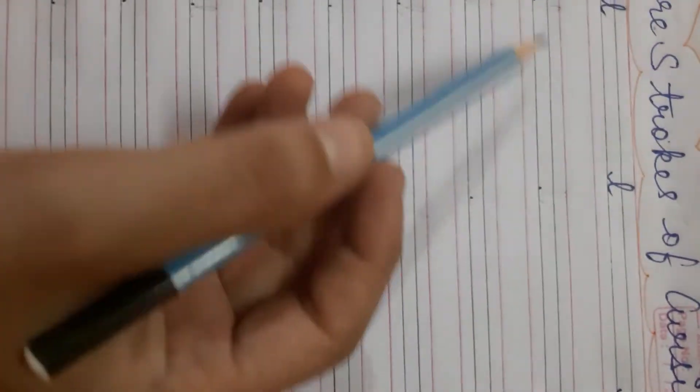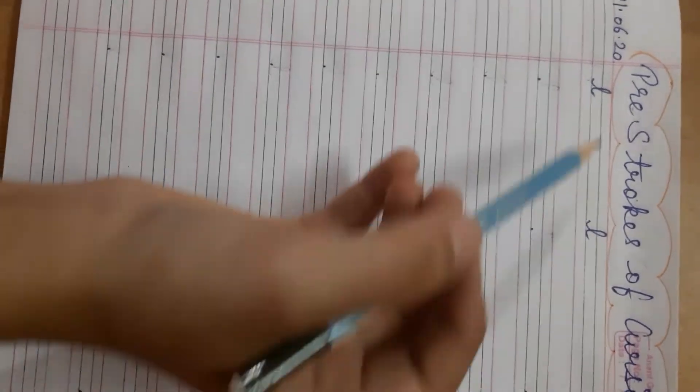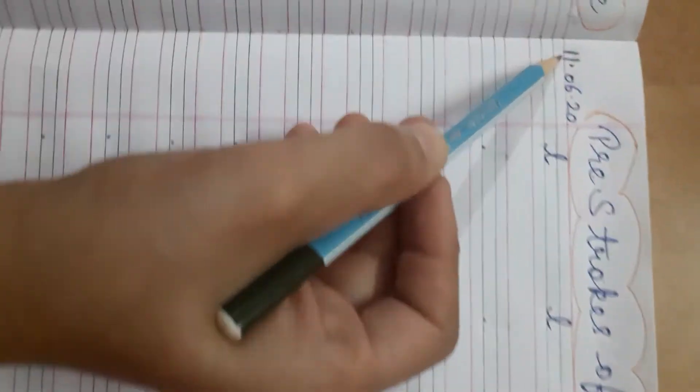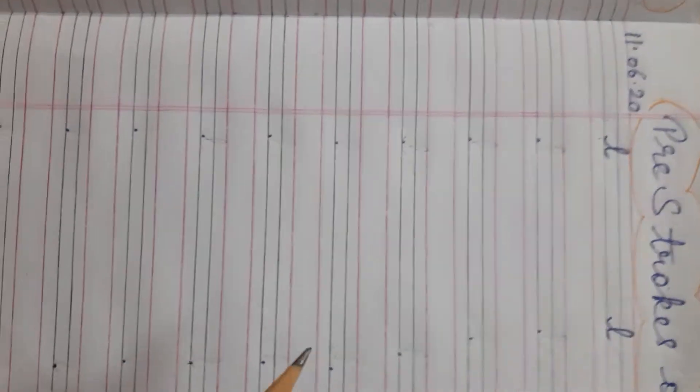Very good. What we will do? Strokes of cursive. What is the date today? 11th June 2020.